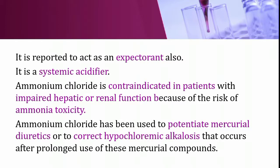Ammonium chloride has been used to potentiate mercurial diuretics or to correct hypochloremic alkalosis that occurs after prolonged use of mercurial compounds. Ammonium chloride is acidic in nature and is therefore used to treat alkalosis.